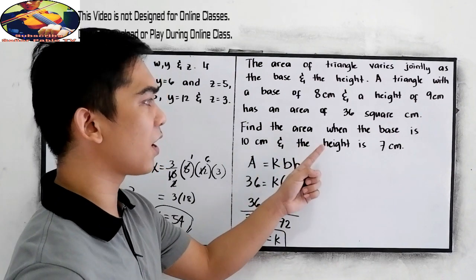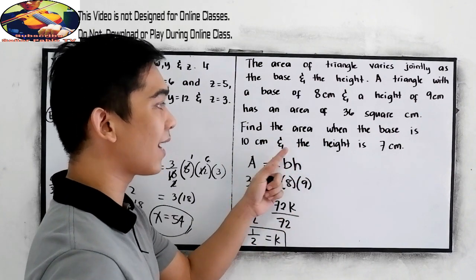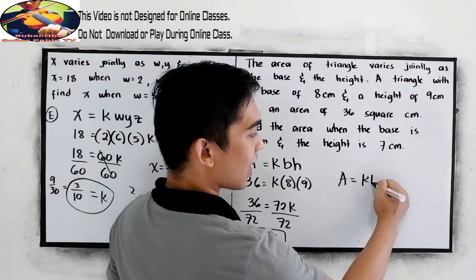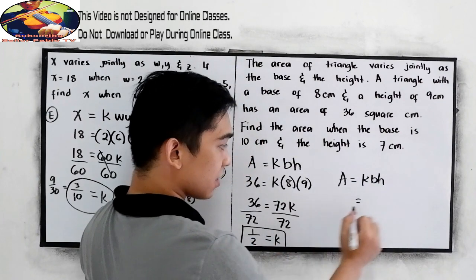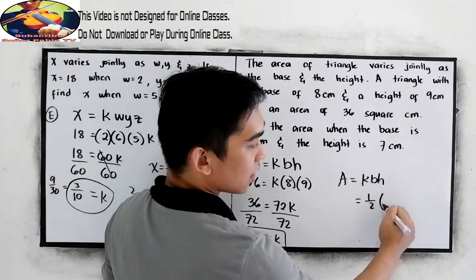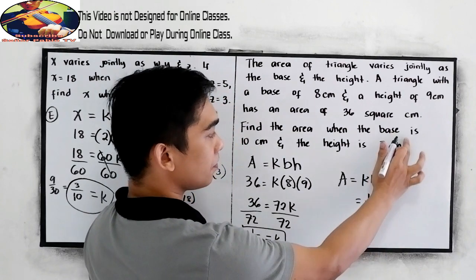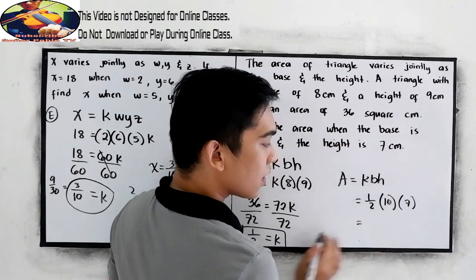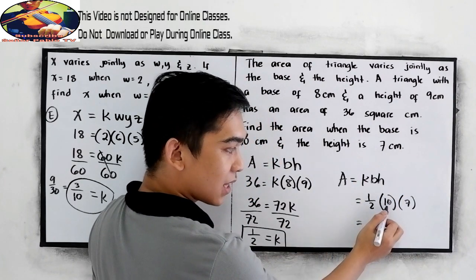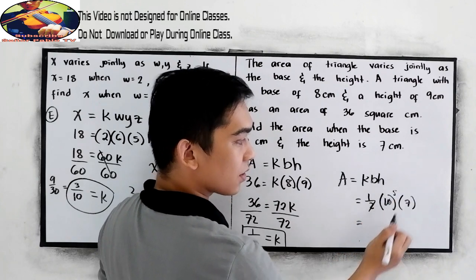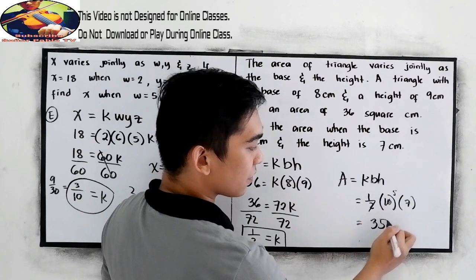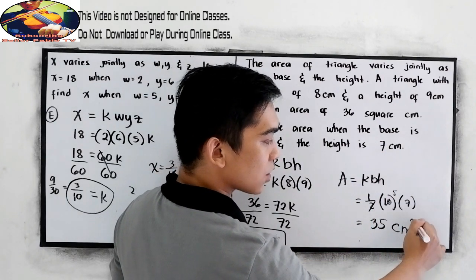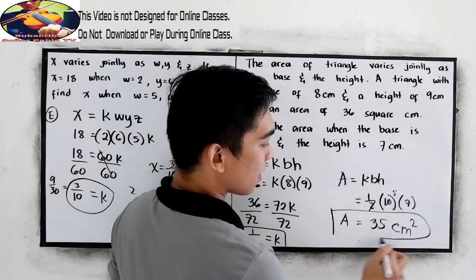The question is find the area when the base is 10 and the height is 7. We have area equals k times B times H. Our k is 1 half, base is 10, and height is 7. Using cancellation method, 10 divided by 2 gives us 5, and 5 times 7 equals 35. Since we are talking about area, we have 35 cm squared.